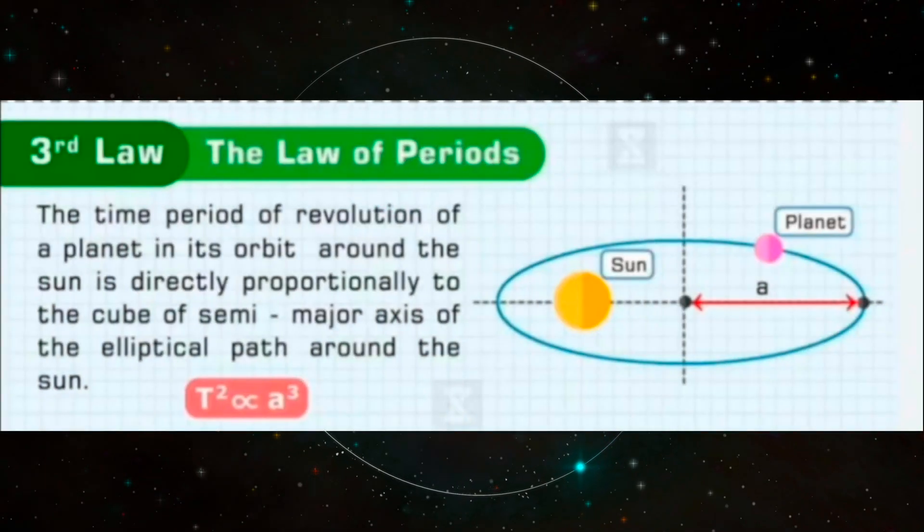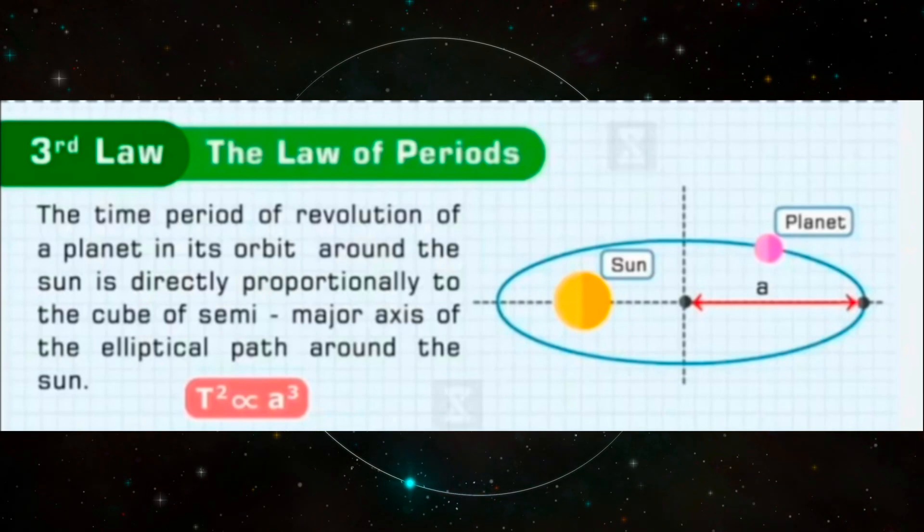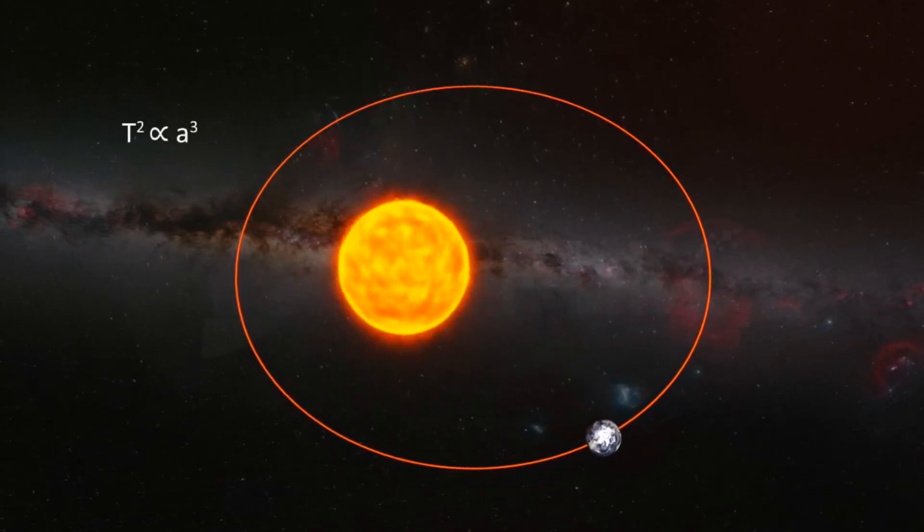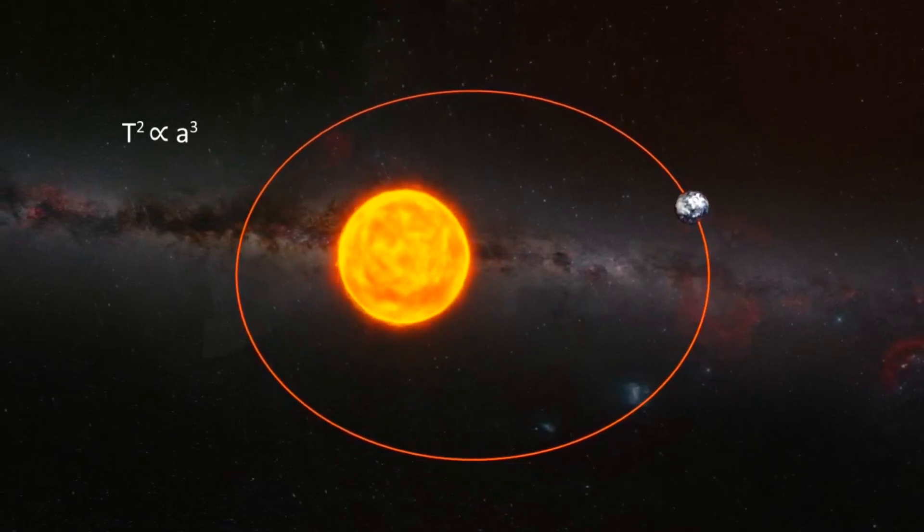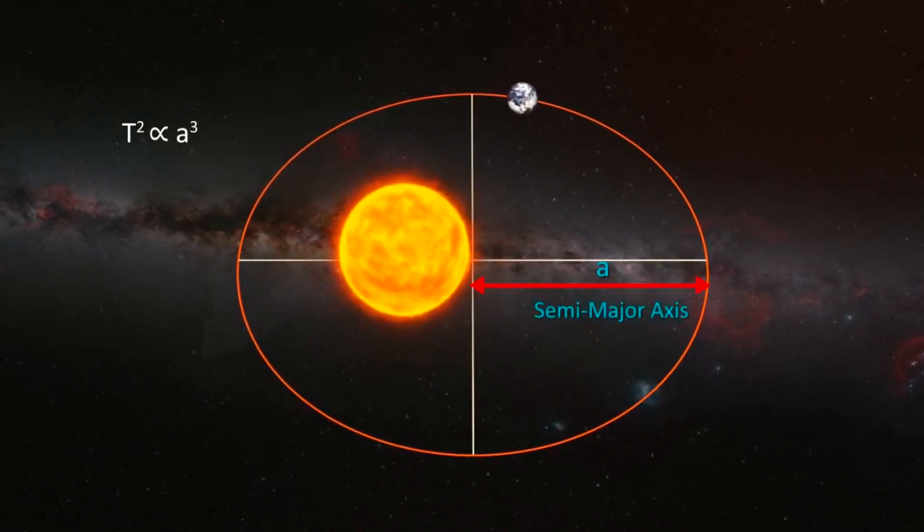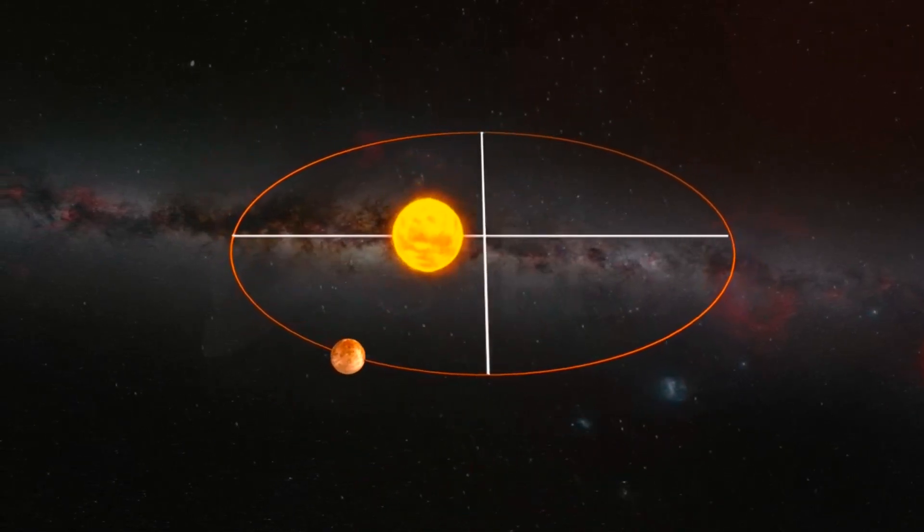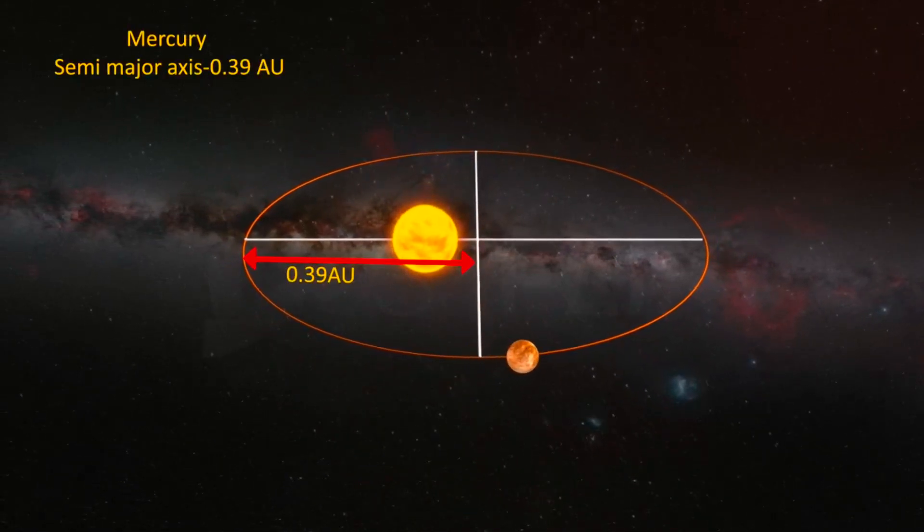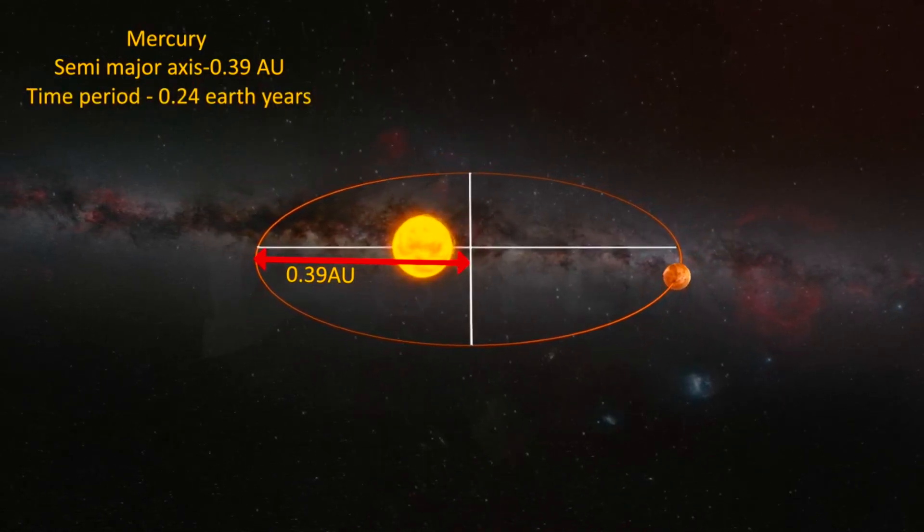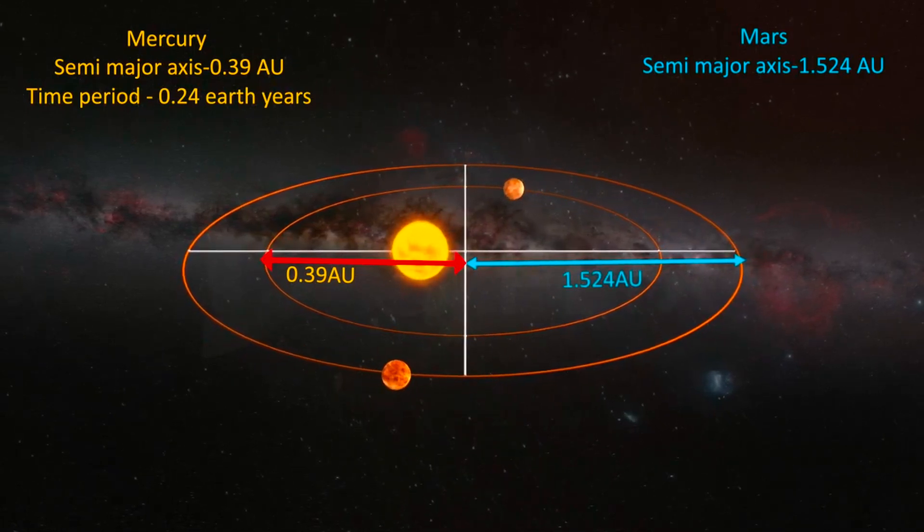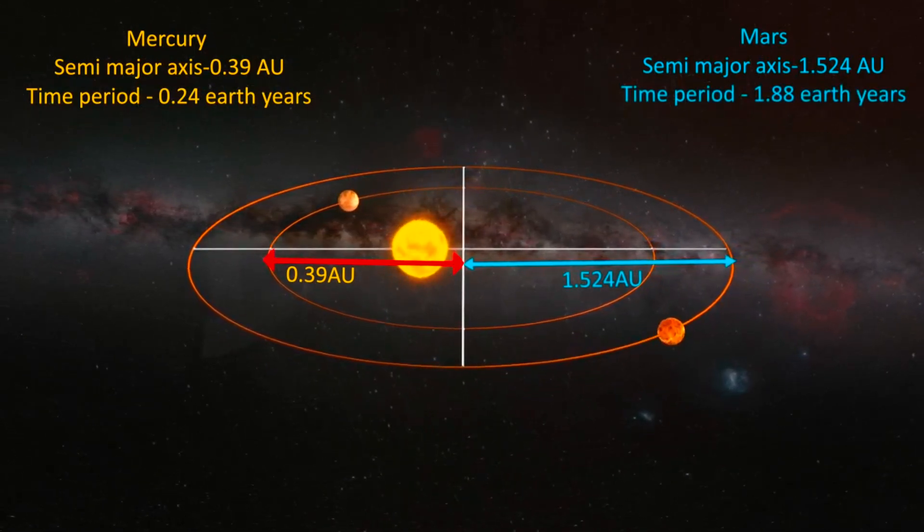Kepler's third law goes one step further by telling us how the orbital periods scale up for different-sized ellipses at a range of distances from the sun. It states that the squares of the orbital periods are proportional to the cube power of the longest axis of the elliptical orbit. The larger the elliptical orbit, the slower the period takes to complete an orbit. So planets further from the sun orbit more slowly than nearby planets. Mars takes nearly two Earth years to go around the sun, Saturn 29 years, and Neptune 165 years.